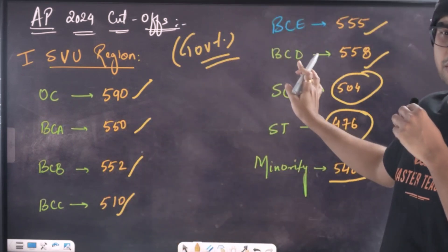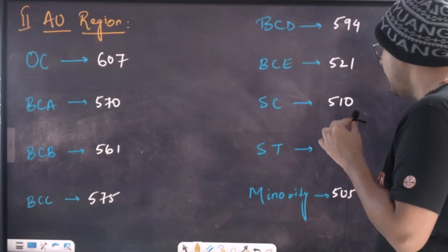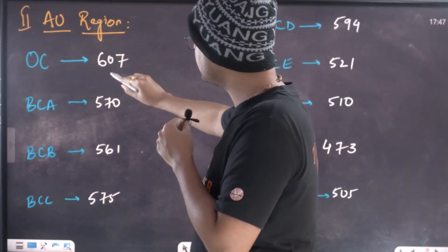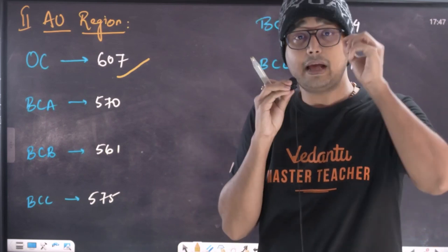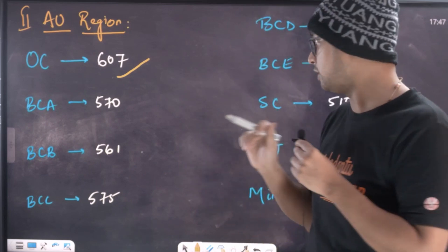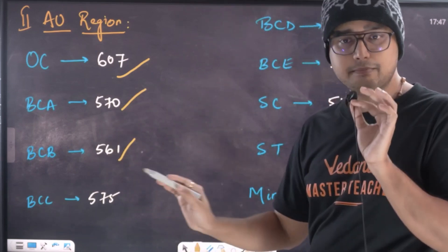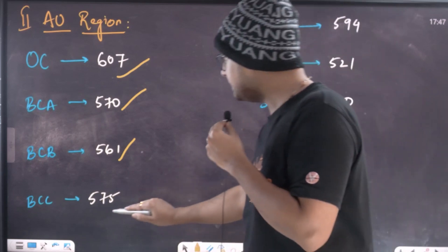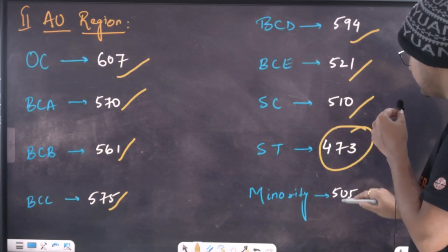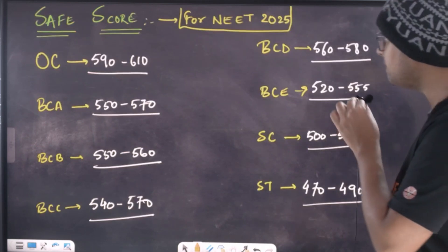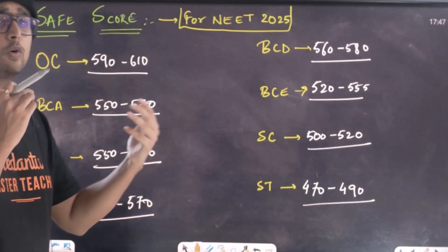For private colleges, you need to beat the category and category seats. In the EU region, the OC cut-off is 607 — which is really high, above 600. General category students need 600+ in the EU region. BC-A is 570, BC-B is 561. We are just estimating. BC-C is 575, BC-D is 594, BC-E is 521, SC is 510, ST is 473, and Minority is 505. So for 2024, I have a safe score.